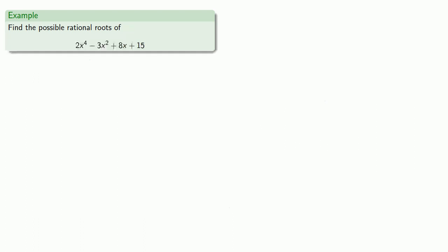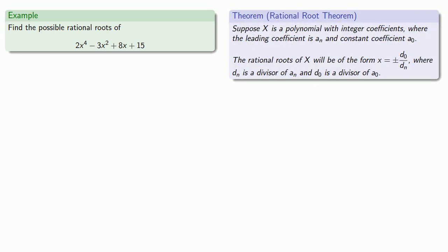How about the possibilities for the rational roots of this polynomial? So our rational root theorem applies when we have a polynomial with integer coefficients. Check. And it guarantees that the possible rational roots will have the form a divisor of the constant over a divisor of the leading coefficient. So in this case, the possible rational roots will have the form divisor of 15 over divisor of 2.